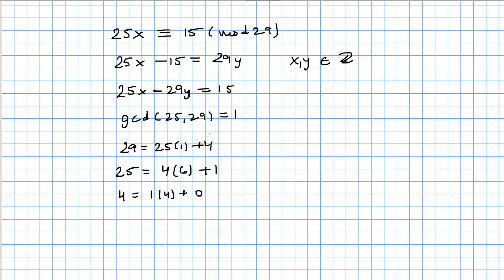Now we work backwards. We start with: 1 equals 25 minus 4 times 6. And 4 equals 29 minus 25. Substituting, we get 25 plus 25 times 6 — that's 7 copies of 25 — minus 29 times 6.